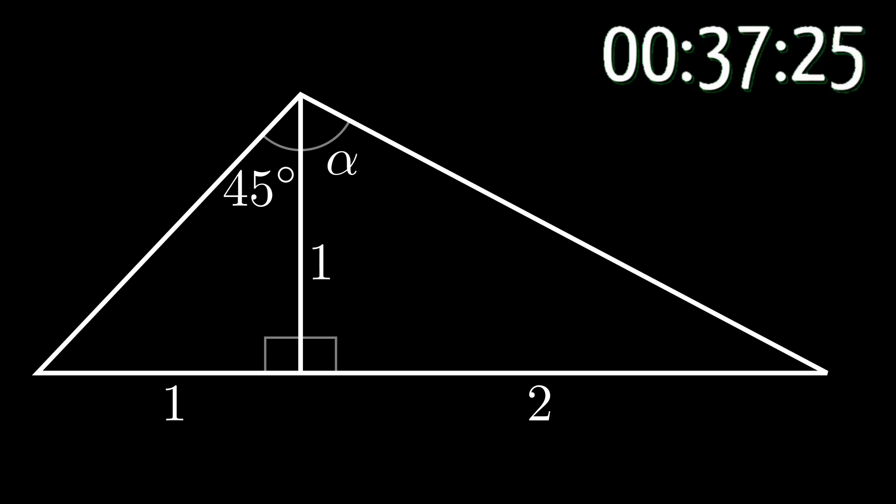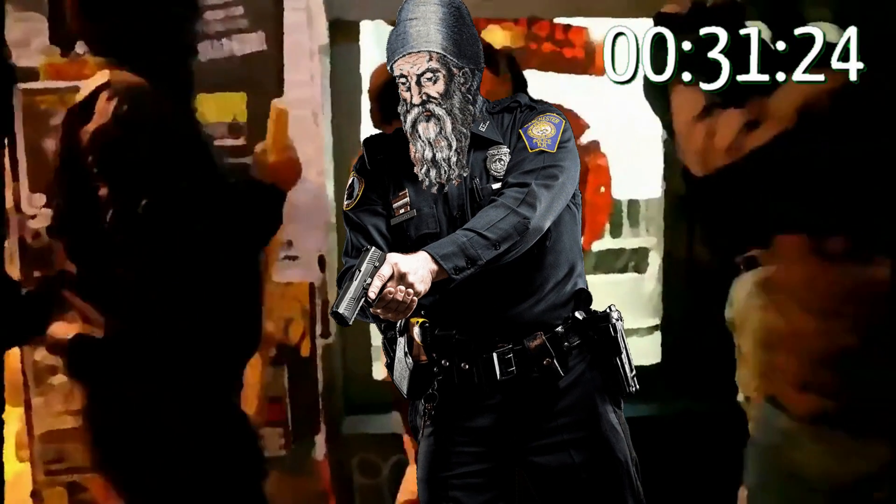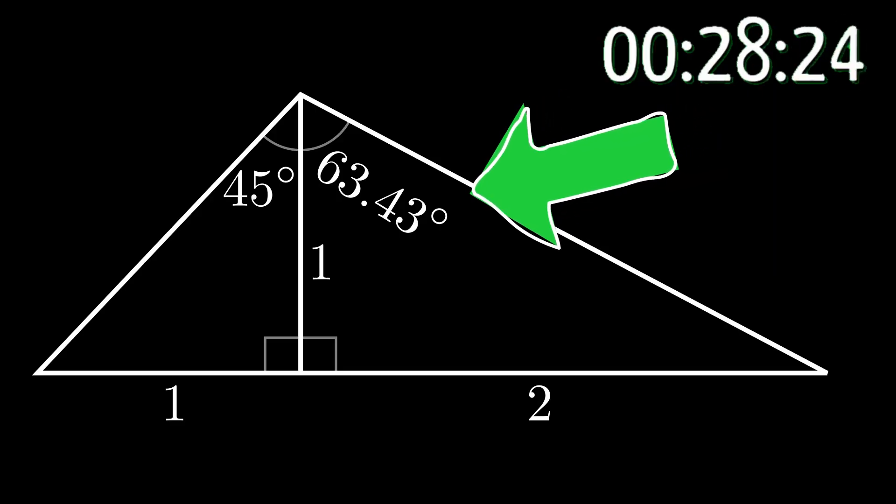It's easiest to demonstrate why with this diagram. What's the missing angle? If you said 90 degrees, you're going to prison! It's 63.43 degrees.